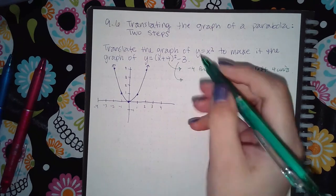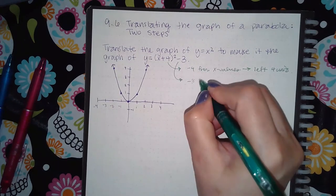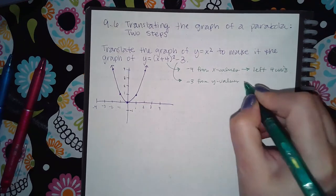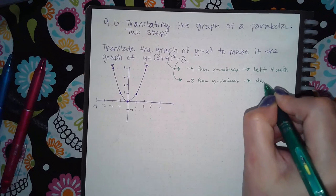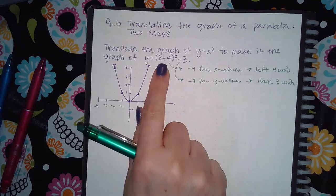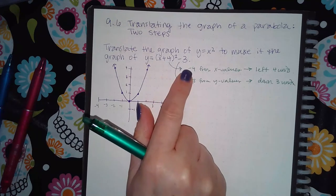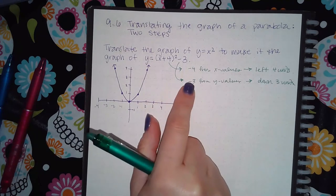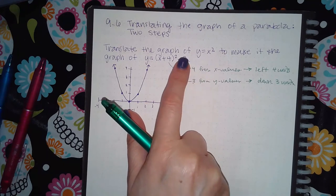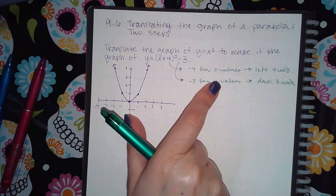And then this minus 3 outside the square is going to subtract 3 from the y values, which is actually going to make the graph move down 3 units. So from the inside of the parentheses it does the opposite, outside the parentheses it does the same thing. Inside the parentheses it's affecting the x values, outside the parentheses it's affecting the y values.